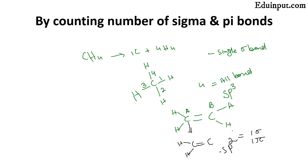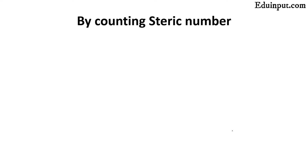Similarly, there are countless molecules where we can predict the type of hybridization just by looking at the structural formula. Let us move toward the next method: the steric number, one of the most interesting methods. It is basically a formula where we find the number of lone pairs in a molecule. We will take again the example of methane.